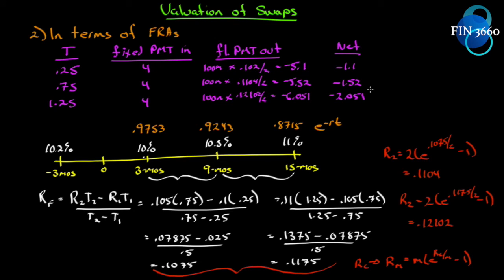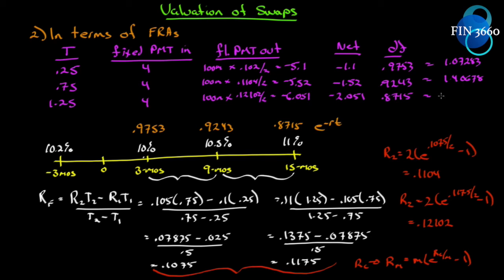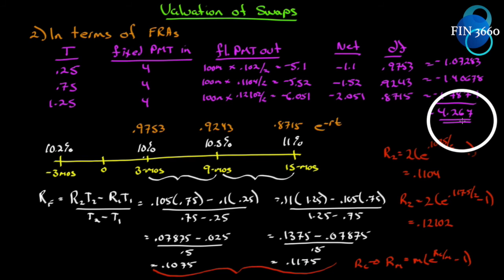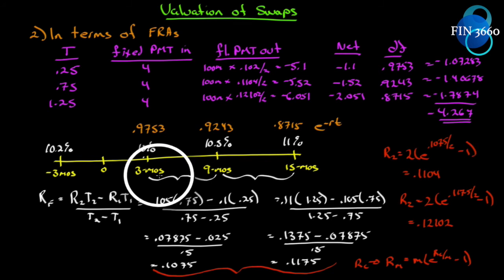Now we apply the discount factors we already calculated: 0.9753, 0.9243, and 0.8715. Multiplying each net cash flow by its discount factor gives −1.07283, −1.40678, and −1.7874. Adding them together gives −4.267. That is exactly the same result we received before using the bond-based method.